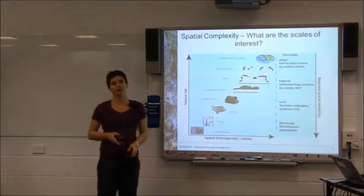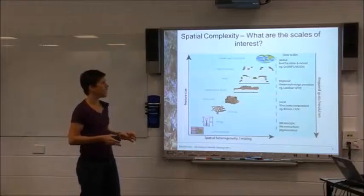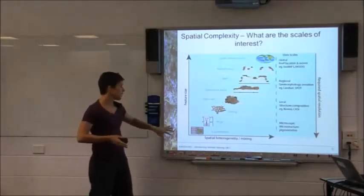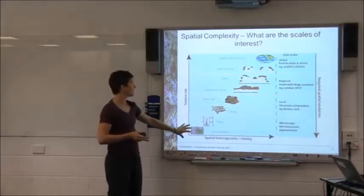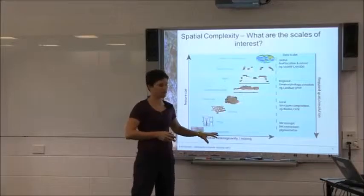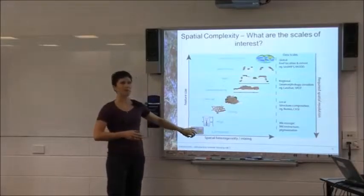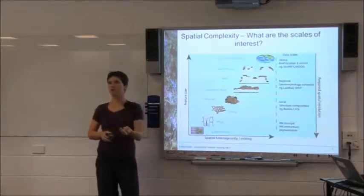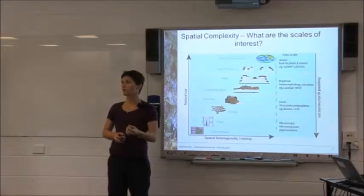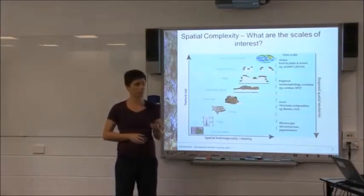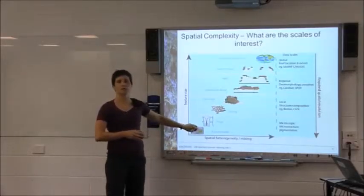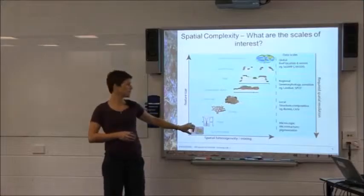When we look at reef environments, it's really important to understand what scale you're interested in. On a chart with feature size on the y-axis and the amount of heterogeneity in the environment, down at the bottom we have zooxanthellae — which is essentially chlorophyll — the way corals photosynthesise and make their own food. That's right down at the really small part that we don't look at so directly using remote sensing.